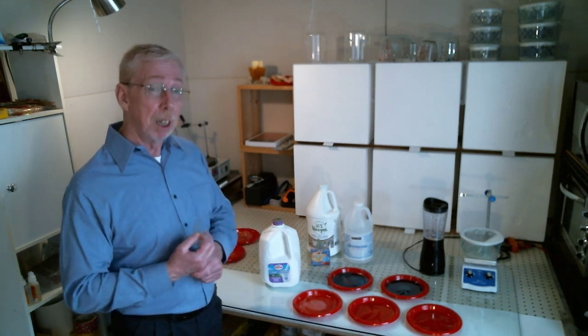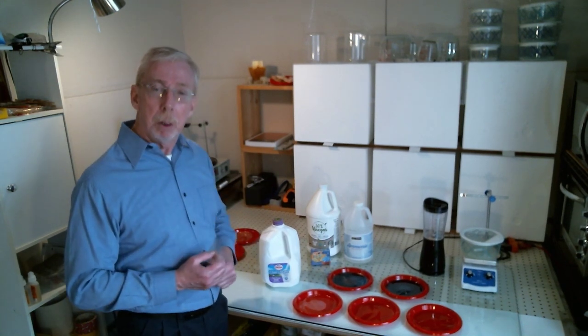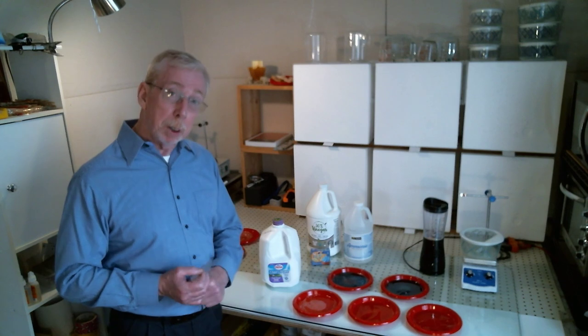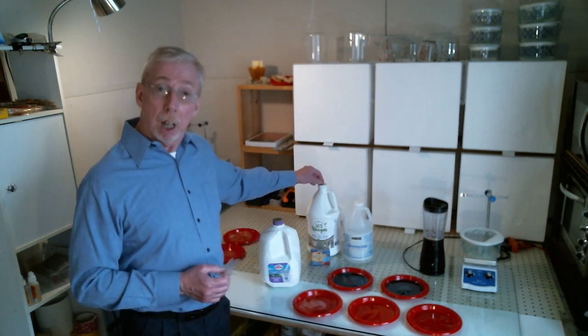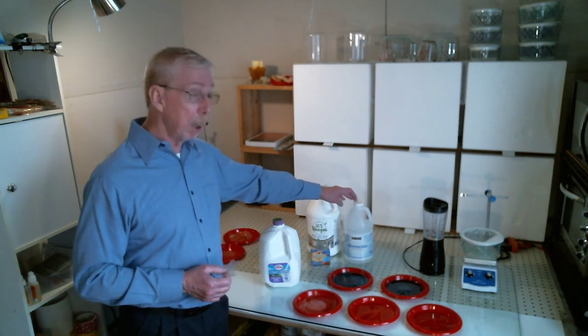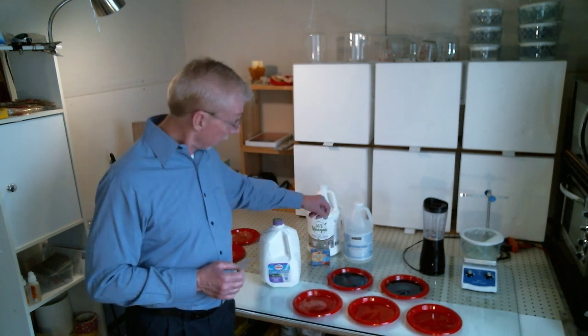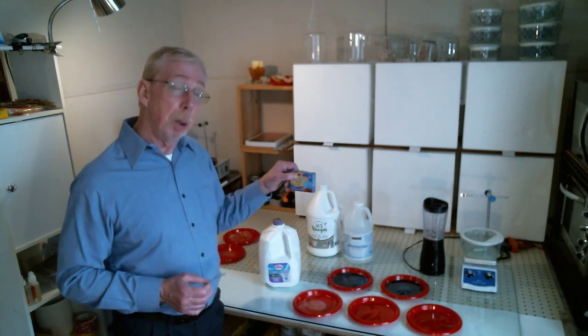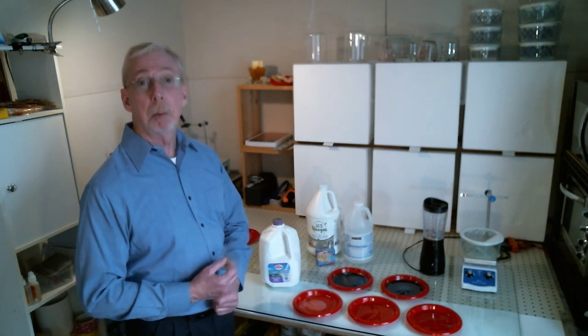To do this, we're going to need some milk - fat-free milk is best. We're going to need some vinegar, just regular vinegar, and we're going to need some ammonia, regular household cleaning ammonia. And I'm going to use food colors to make my embossing powders.